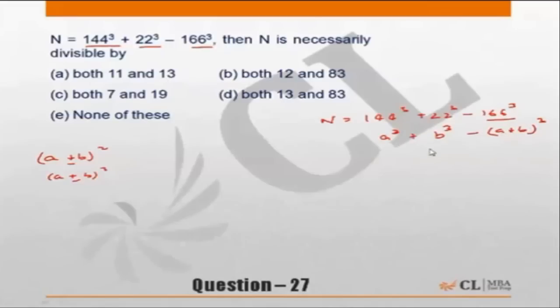So effectively this is the expression that we are looking at. Now the formula for a plus b whole cube is a cube plus b cube plus 3ab into a plus b. Now N is a cube plus b cube minus a plus b whole cube. So let us get them together.